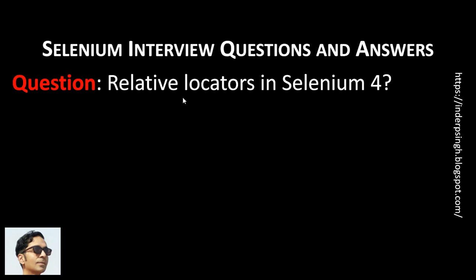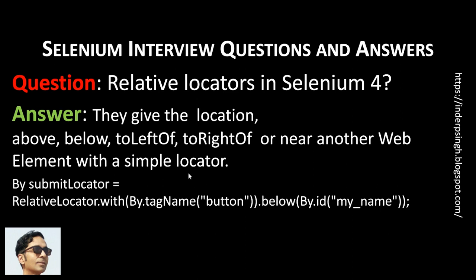The next question is: what are relative locators in Selenium 4? Sometimes it is difficult to write the locator of a web element, but there is another web element with a simple locator that is close to it. A relative locator gives a location above, below, to left of, to right of, or near another web element with a simple locator. For example, if it is difficult to find the locator of the submit button, I can find the locator of another web element whose id is my_name, and using a relative locator, specify that there is a tag name button that is below the web element whose id is my_name.